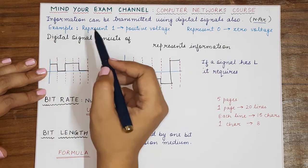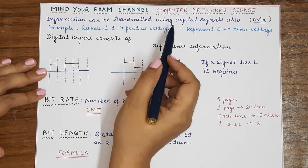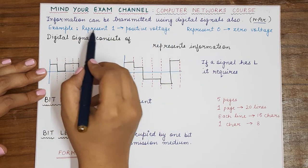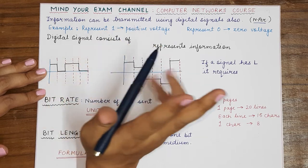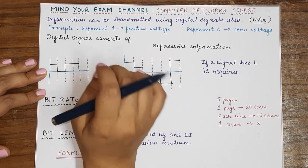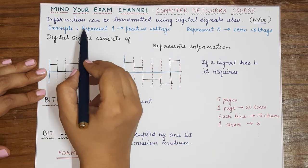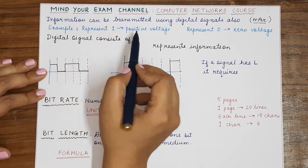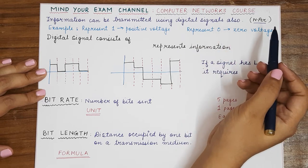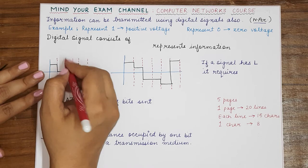Now there are different ways in which information can be represented using digital signals. For example, one way can be we can represent two bits of information. Bits means the zero and one that are understood by the computer. So basically we can represent one as a positive voltage and we can represent zero as a zero voltage.